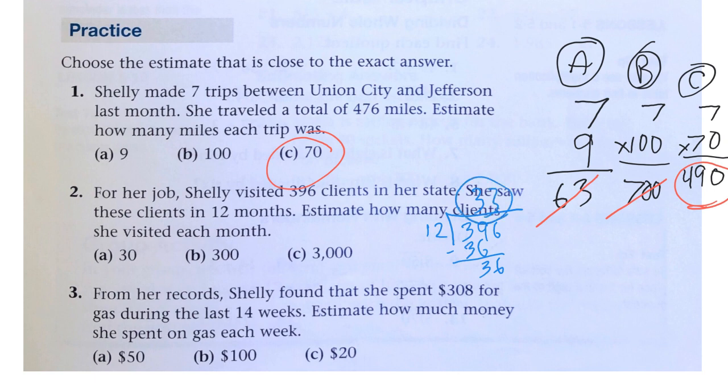So, she saw about 33. It would be 30. We could also multiply the 12 times 30, and that gets us really close as well for A.